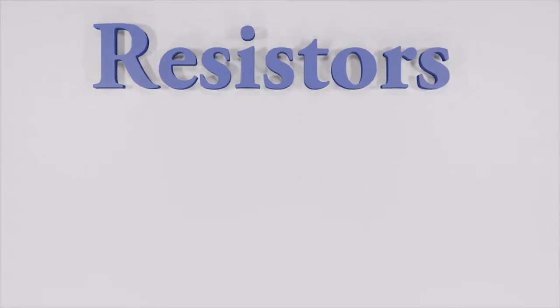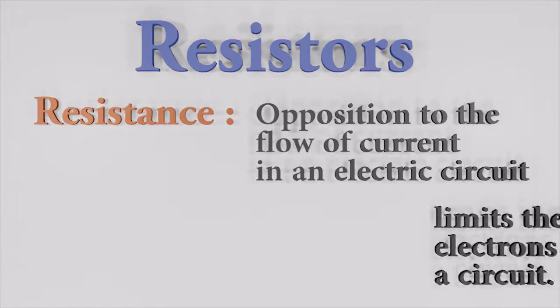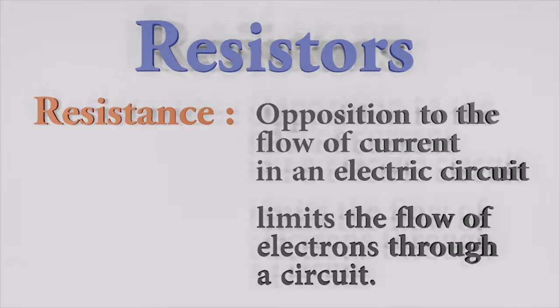We know electrical resistance is opposition to the flow of current in an electric circuit. The resistor's resistance limits the flow of electrons through a circuit.